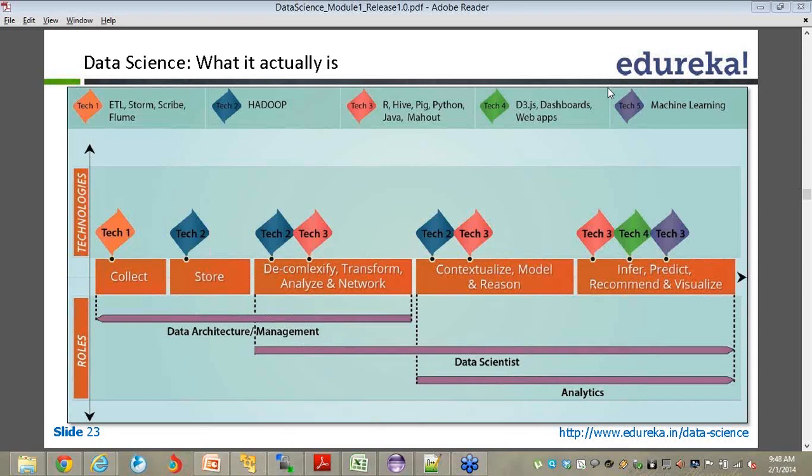So when you talk about data collection, technology stack 1, which was basically about Storm, Flume, Scribe, etc., they would come. When it comes to the storage part, Hadoop, no doubt about it. By the way, Hadoop is storage plus computation grid. That is the unique thing and that is what makes it so powerful. Many of the other frameworks are either storage grid or computation grid.